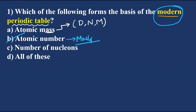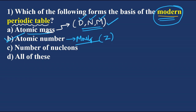The scientist Moseley framed the modern periodic table on the basis of atomic number, denoted by capital Z. Dobereiner, Newlands, and Mendeleev totally based their tables on atomic mass, but Moseley made the modern periodic table on the basis of atomic number. So option B is the answer.